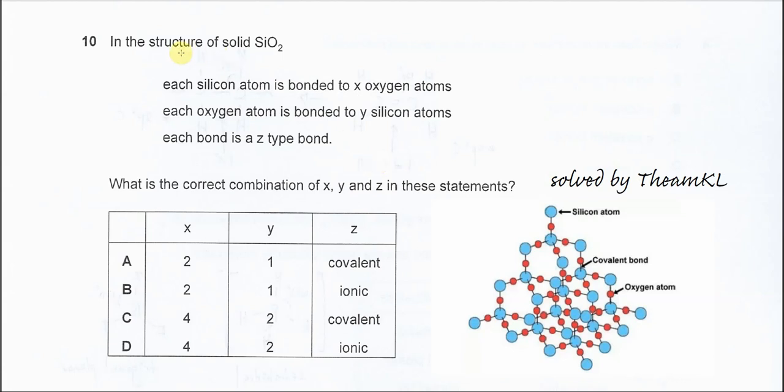Question 10: In the structure of solid SiO2, each silicon atom is bonded to X oxygen atoms and each oxygen atom is bonded to Y silicon atoms. Each bond is a Z type bond. We know that SiO2 is a giant molecular structure and it has covalent bonds only, so therefore the Z type of bond must be covalent bond.